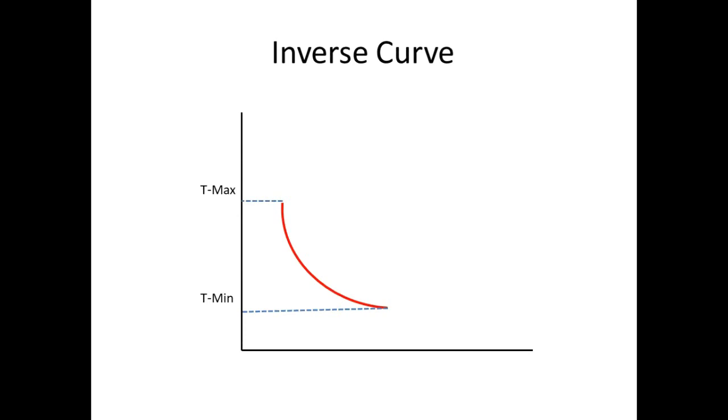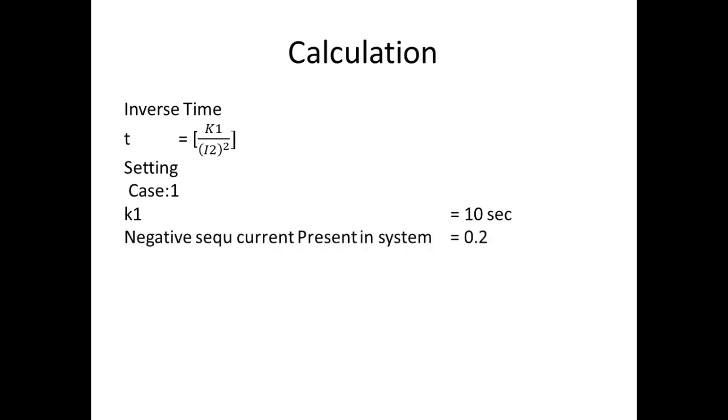Now we can go for calculation. For inverse time the formula is T equal to K1 by I2 squared. In this we can see two cases. In case one let us consider the negative sequence present in the system is 0.2 and we know K1 from the settings it was 10. When you apply in this formula we get T equal to 250 seconds.